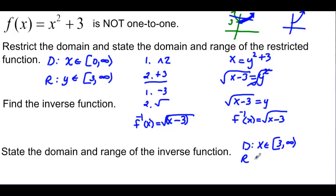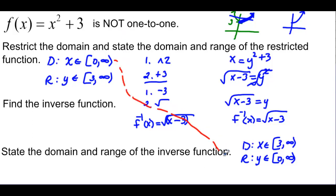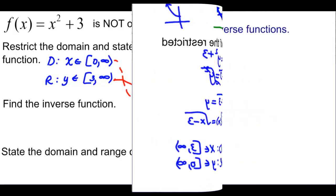And then my range: if I start there and let x be 3, I get the square root of 0, which makes that 0. So I start at 0 and go to infinity. The domain of my original function is the range of my inverse function, and the range of my function is the domain of my inverse function — just like we thought.